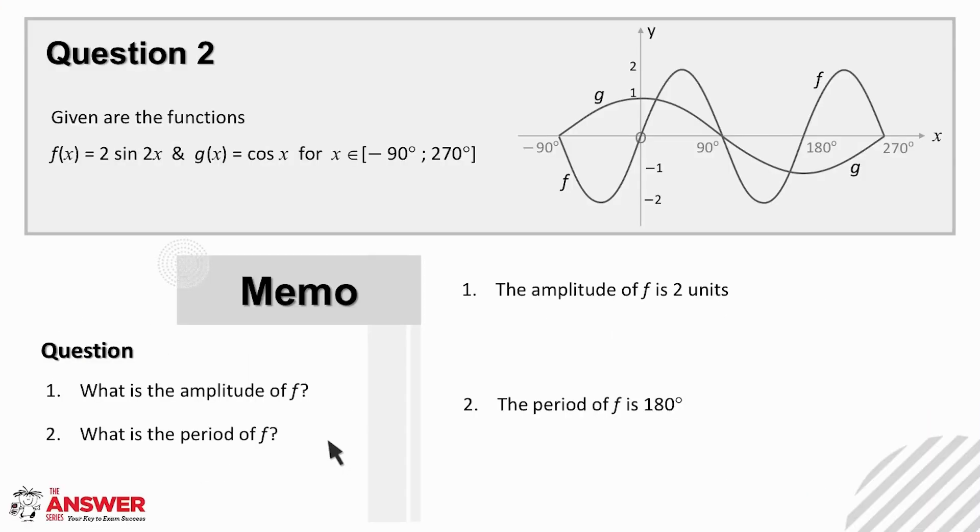The first two questions can be done either by looking at the equation or at the graph. From the equation we can see that f has an amplitude of 2 and a period of 180 degrees. And from the graph, first identify f on the sketch and then read off its amplitude, which is the distance from the midline to its maximum or minimum, and here you can see it's two units, and then its period, where you can see one full wave completes in 180 degrees.